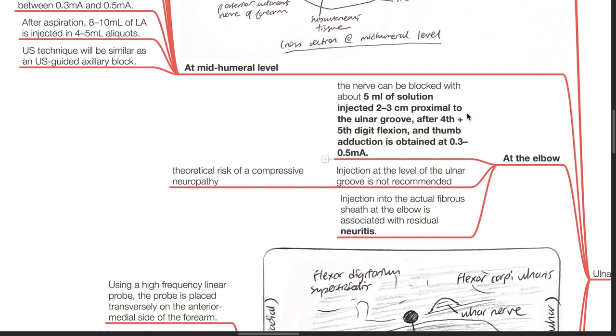Injection at the level of the ulnar groove is not recommended as there is a theoretical risk of compressive neuropathy. Injection into the actual fibrous sheath at the elbow is associated with residual neuritis.